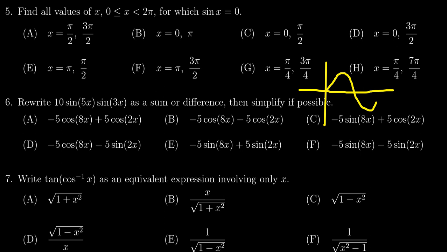the graph looks something like this. The x-intercepts would be here at 0, here at π, and then here at 2π.